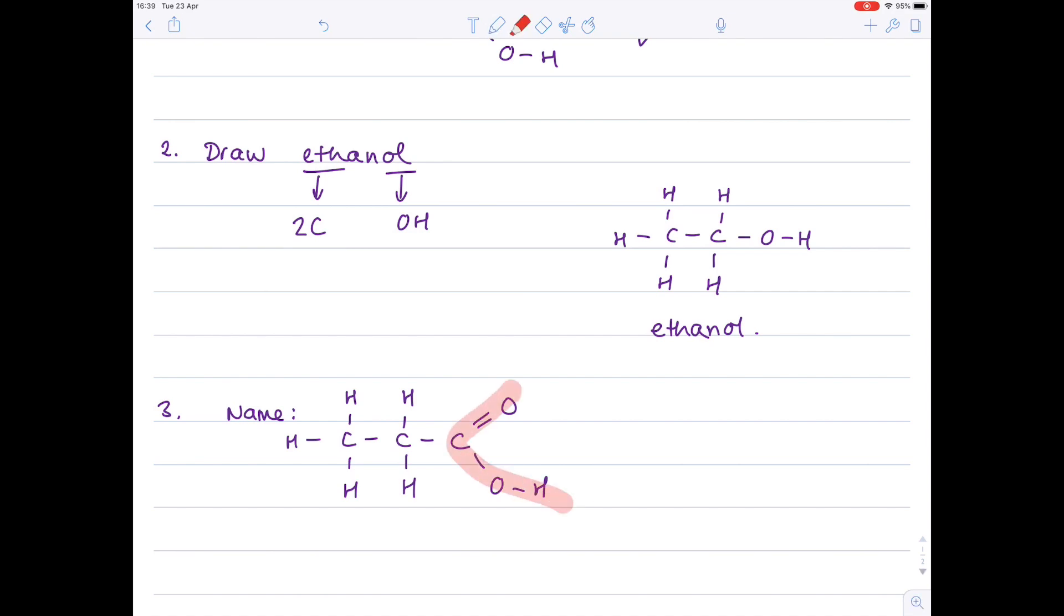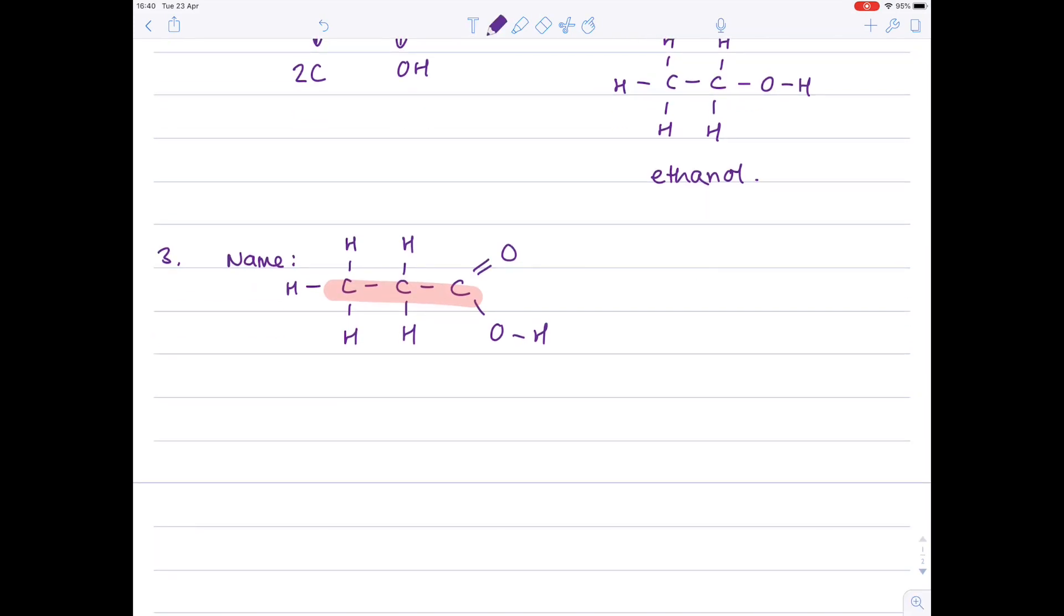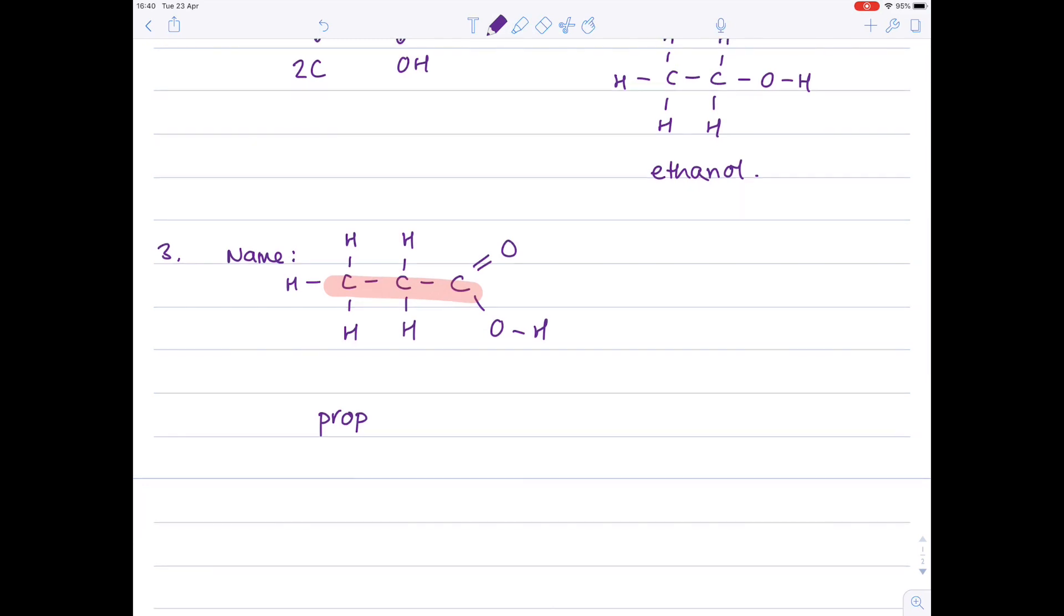First of all identify the functional group, it's a carboxylic acid. Next up count how many carbons it has. It has three. Which is why the beginning part of this name is prop according to the fact it has three carbons. The end is a carboxylic acid which is why it's propanoic acid.